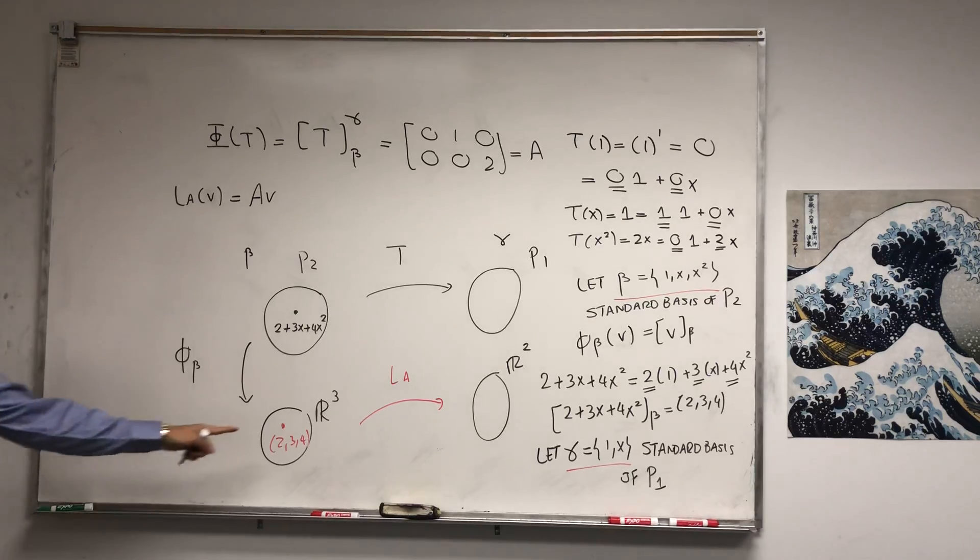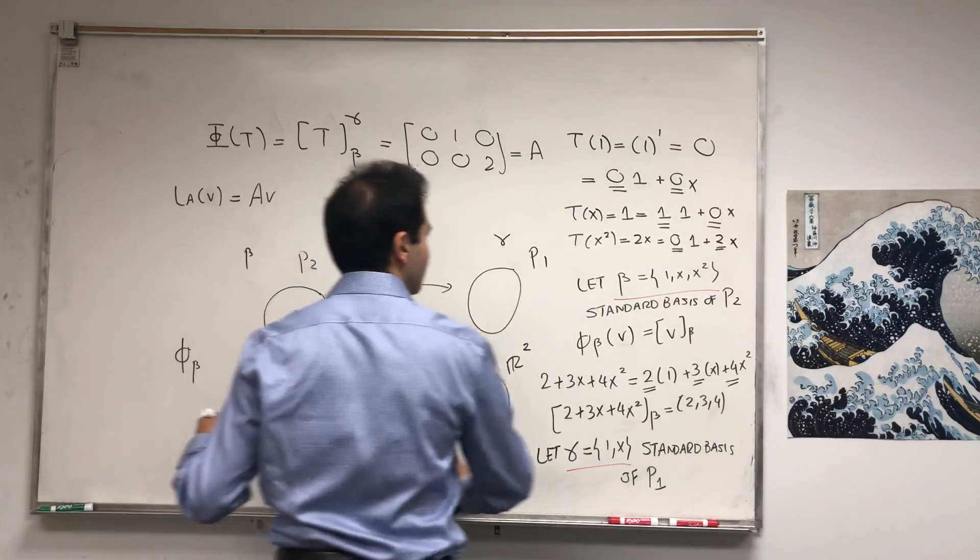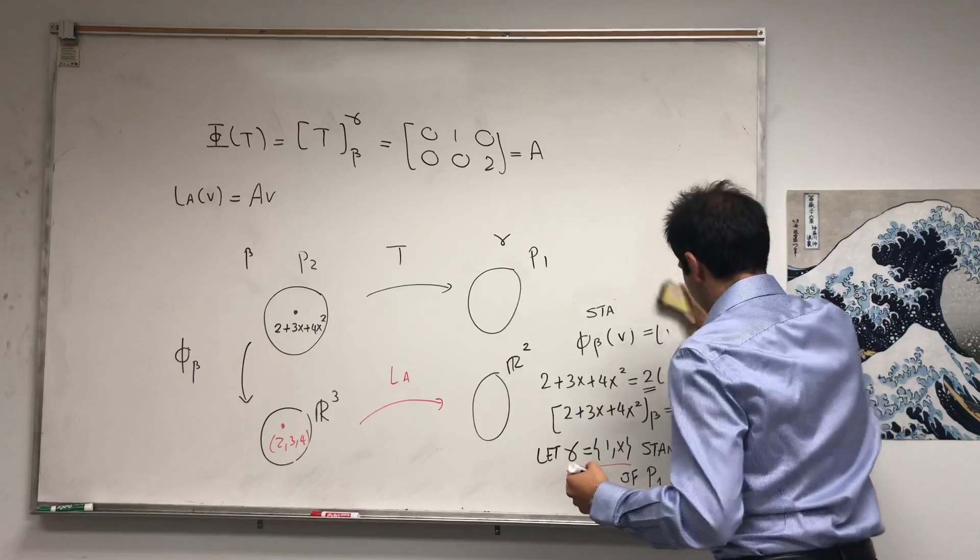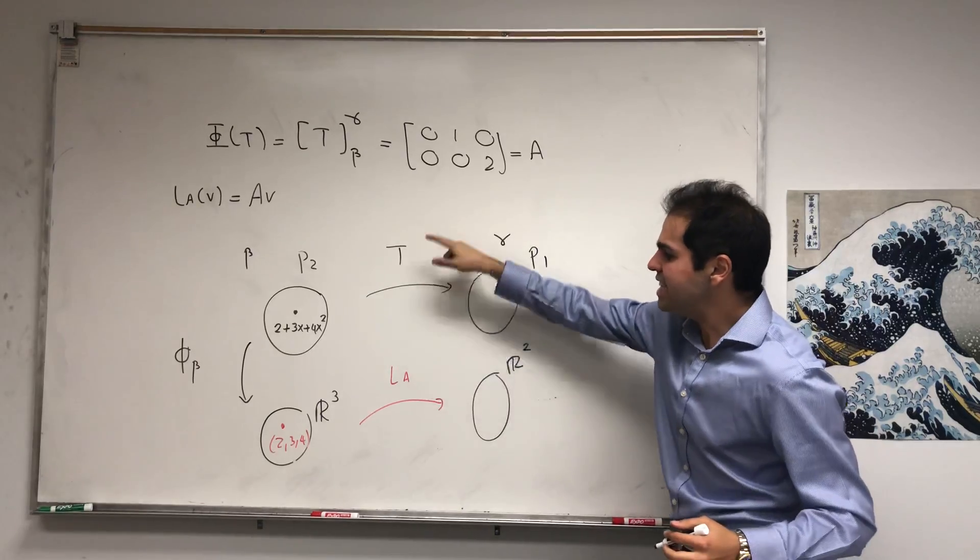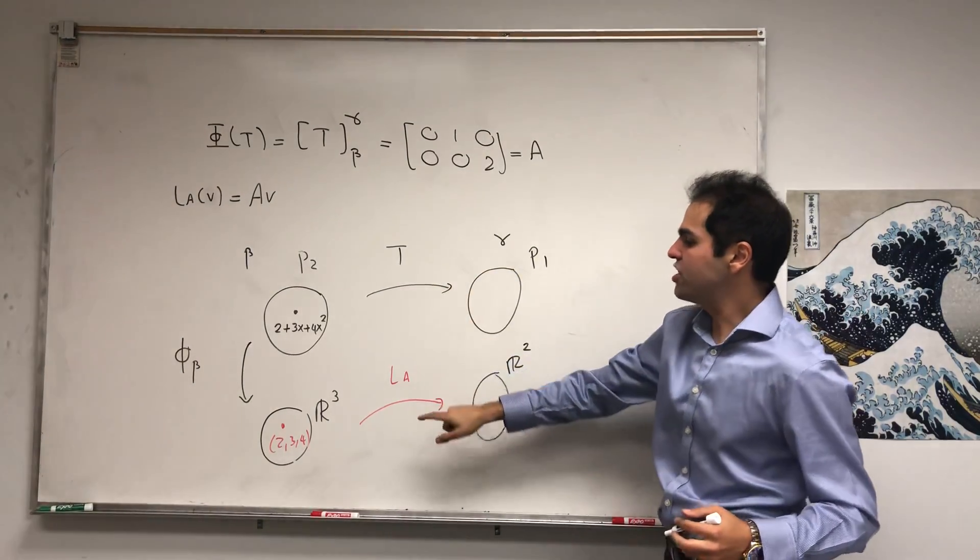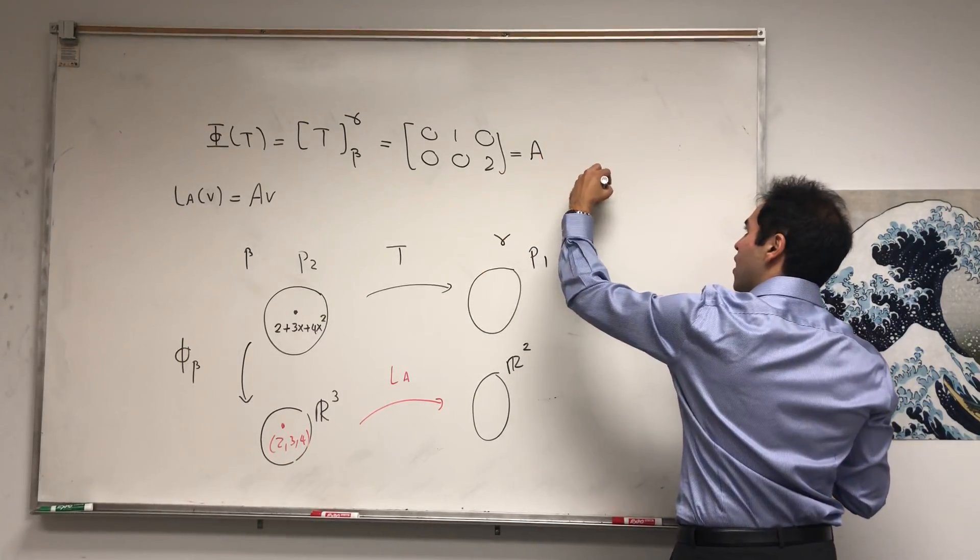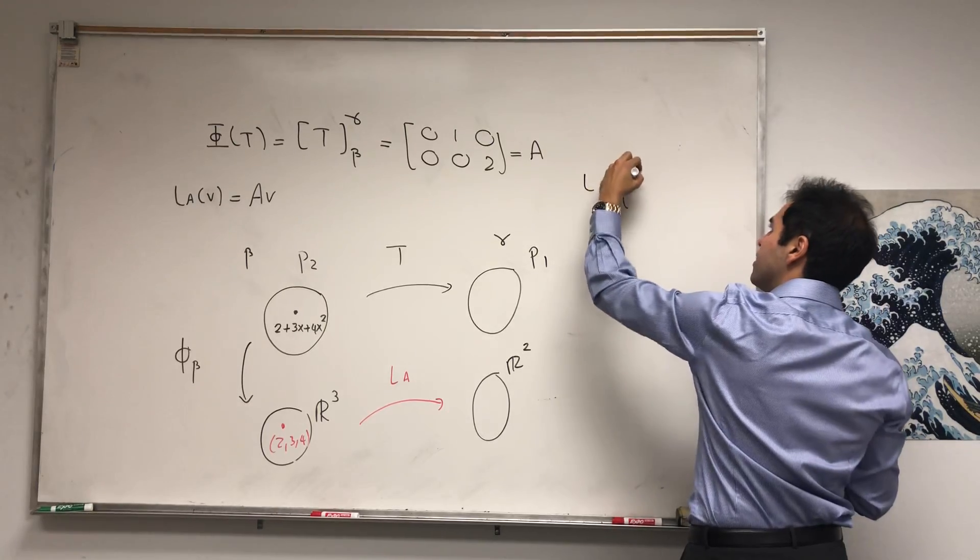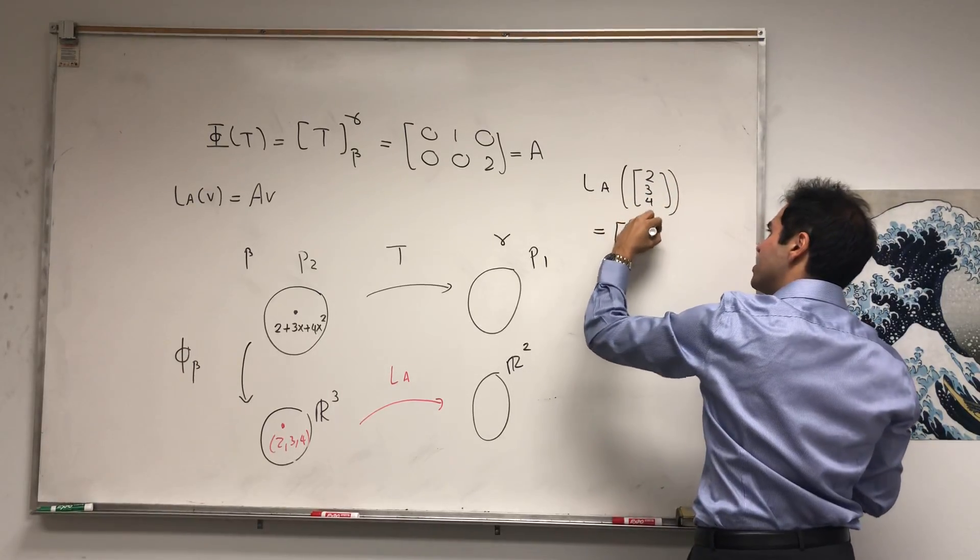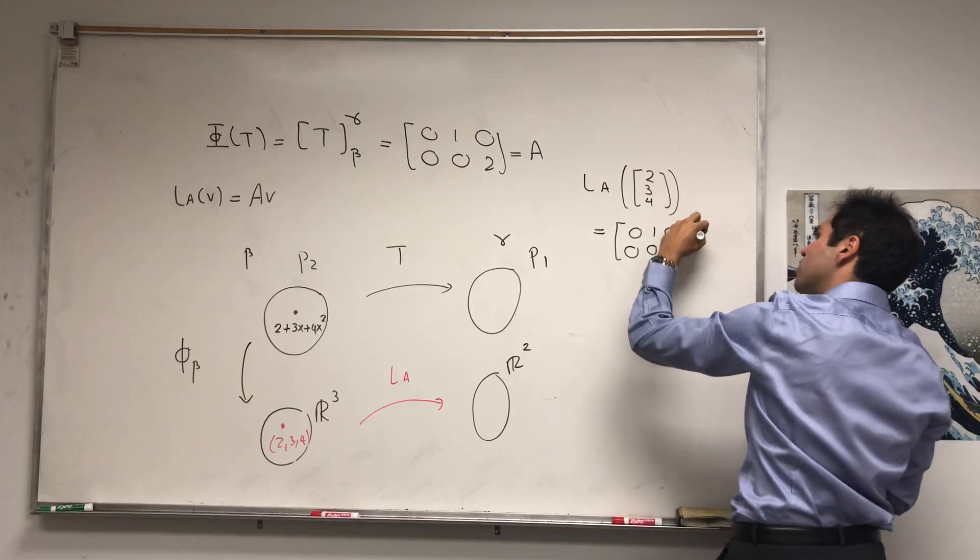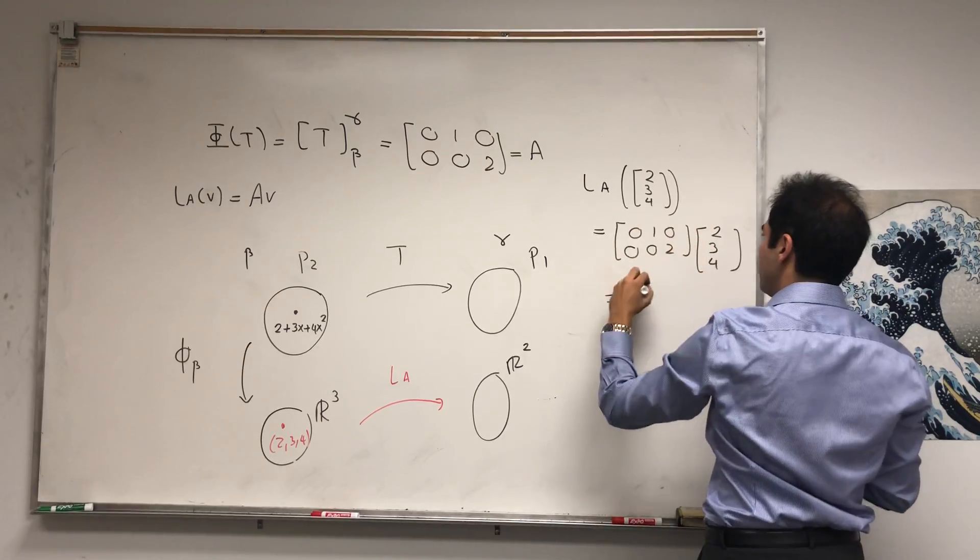So now, let's calculate LA of this vector 2, 3, 4. I'm running out of space, but I don't need that anymore. And again, the idea is T is like LA, so differentiating is just like multiplying this vector 2, 3, 4 by A. So LA of 2, 3, 4, that's A times 2, 3, 4, which is 0, 1, 0, 0, 0, 2 times 2, 3, 4. And if you do that, that becomes just 3 and 8.